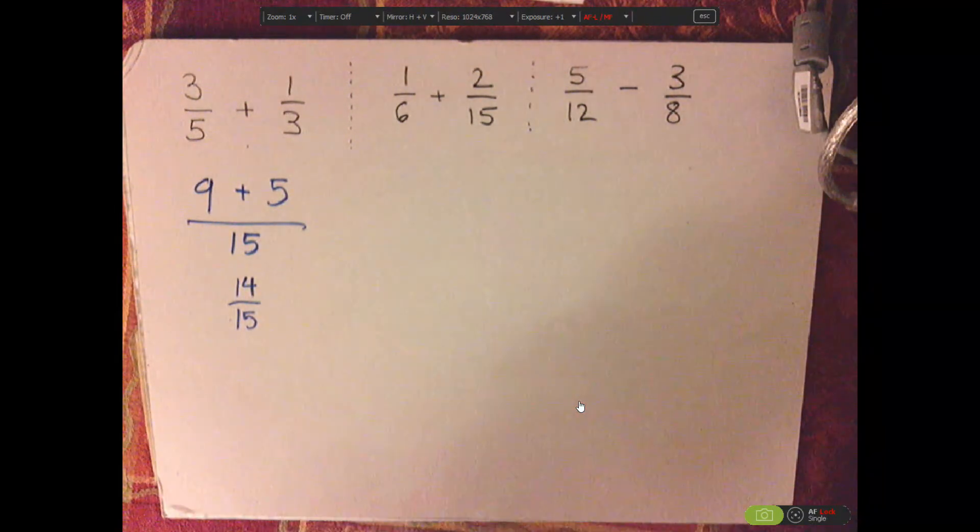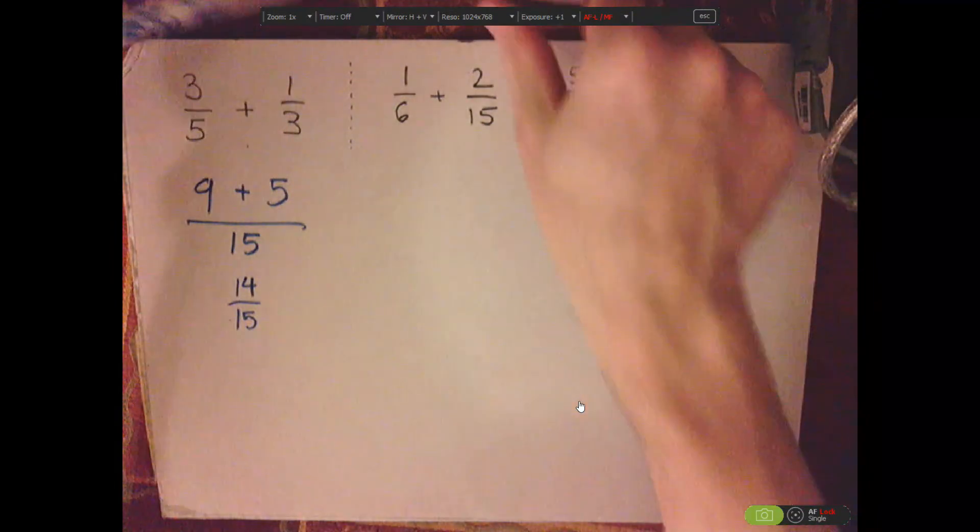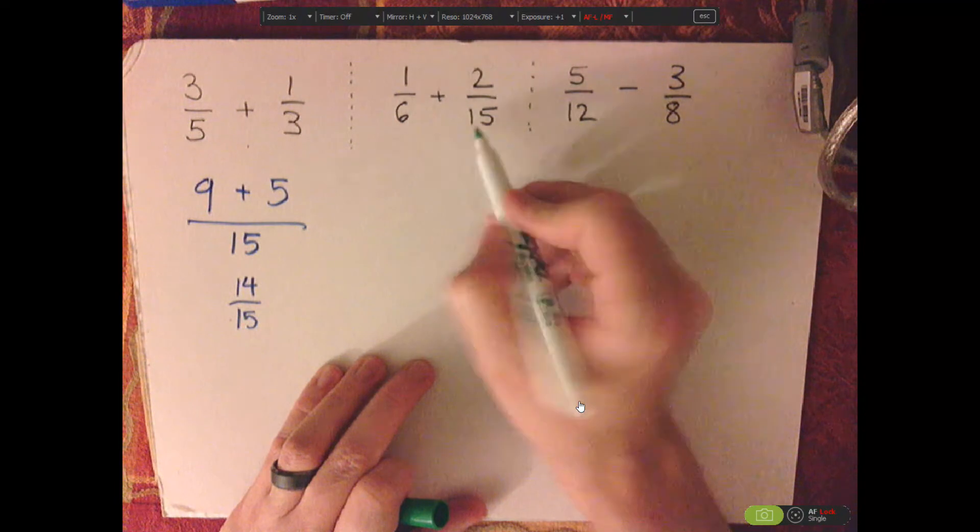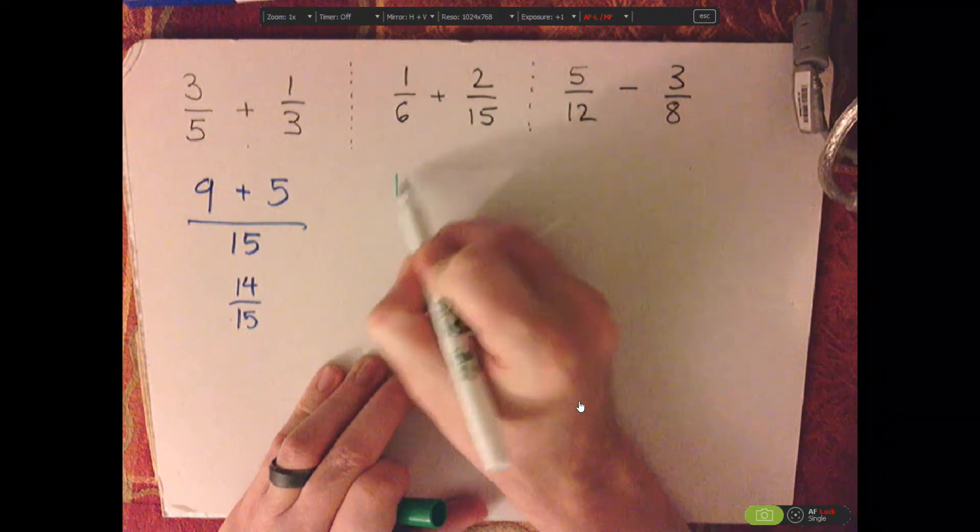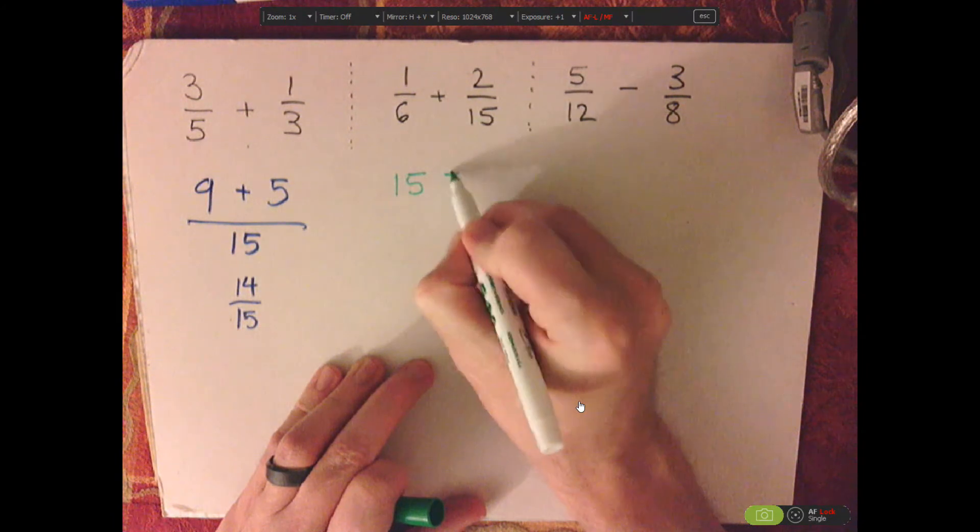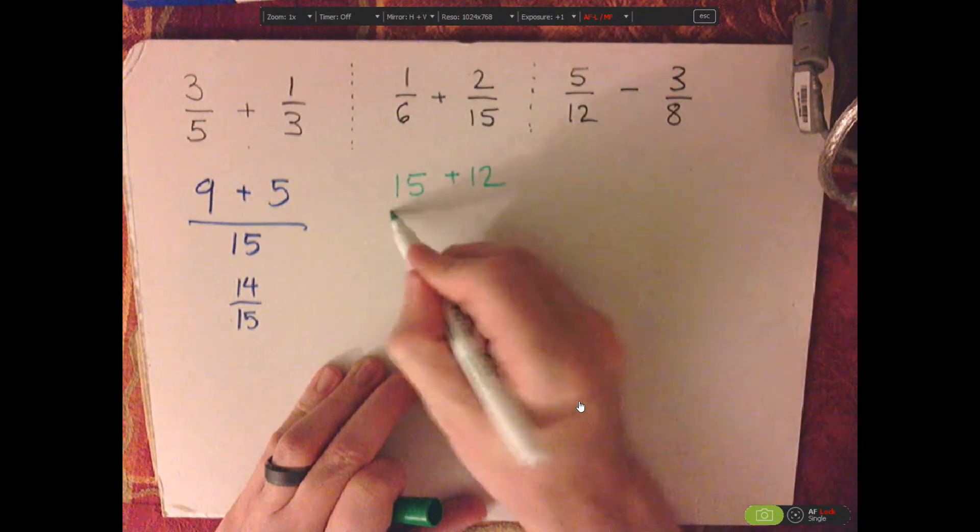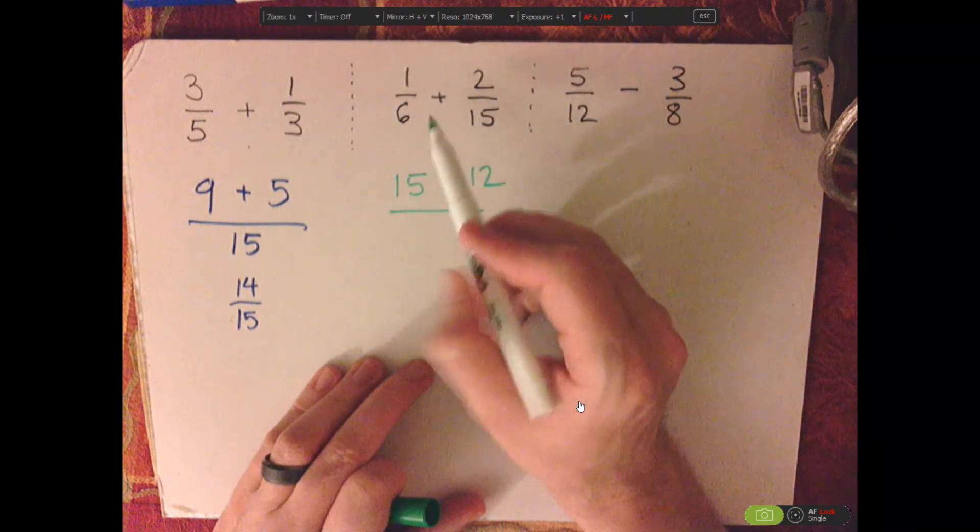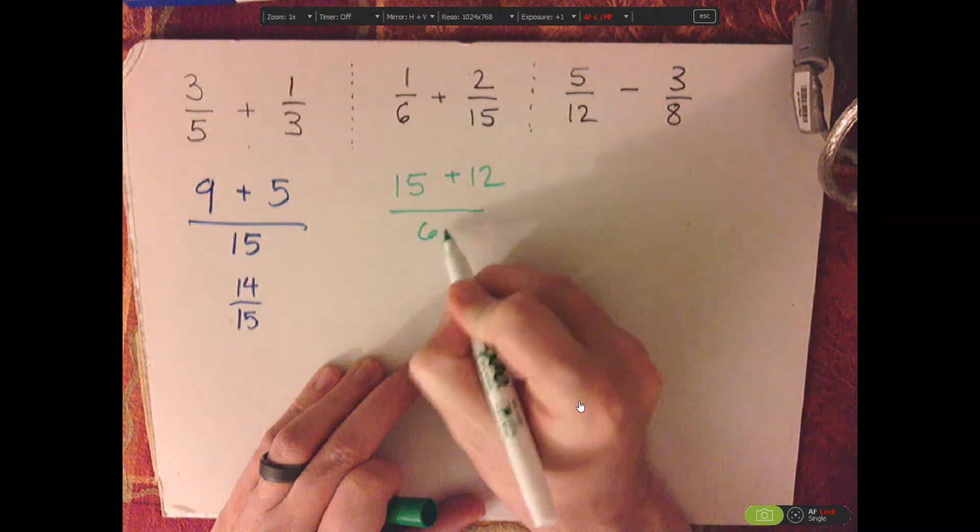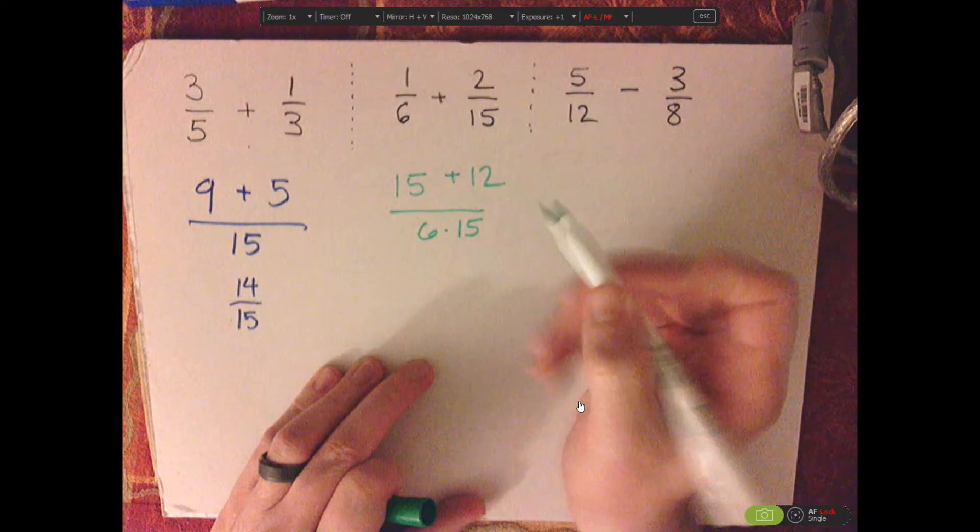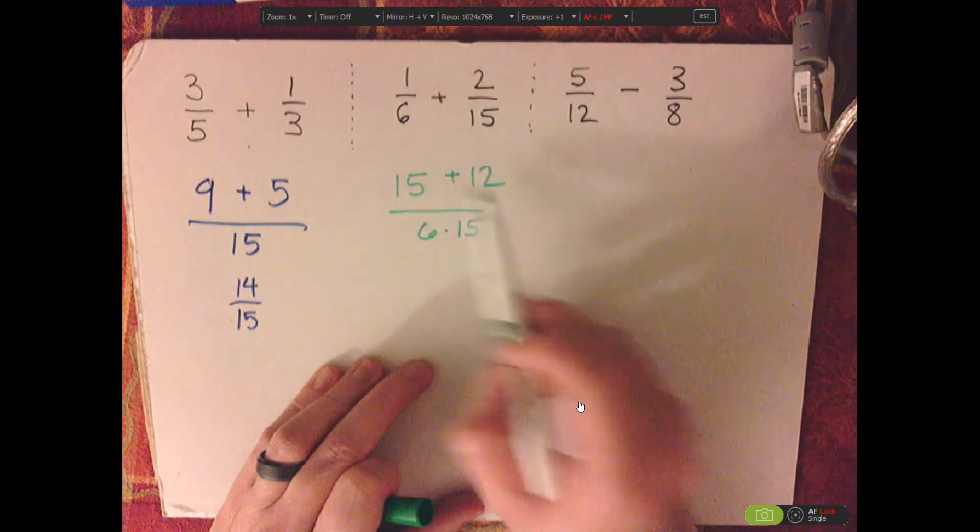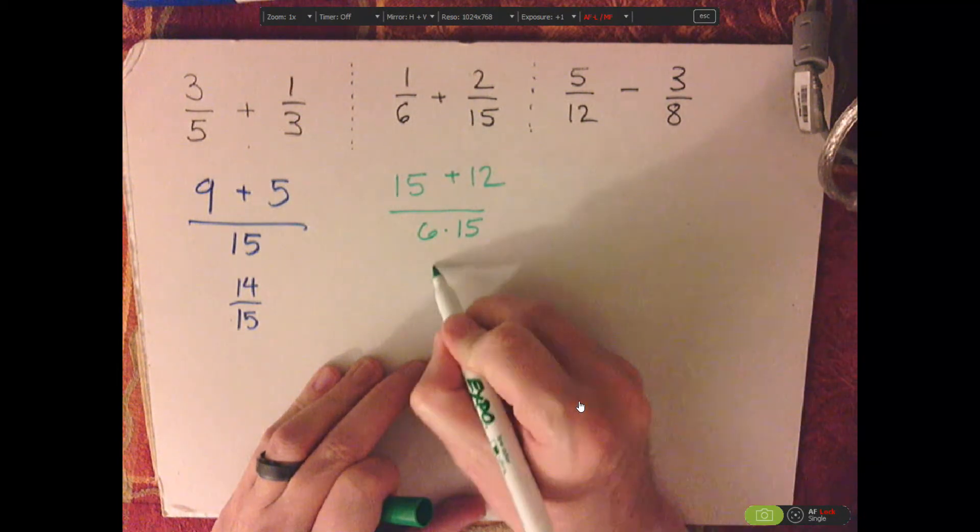Now let's look at 1 sixth plus 2 fifteenths. This would be 1 times 15, which is 15. 6 times 2 is 12. Now what we can do next is just do 6 times 15. We might be able to simplify it. So let's do the top. So that's 15 plus 12, which is 27.